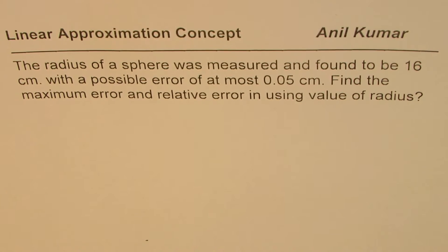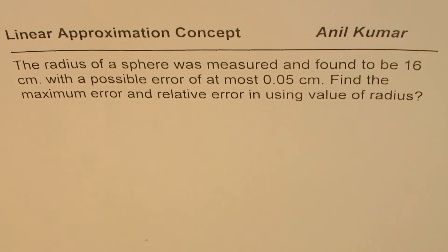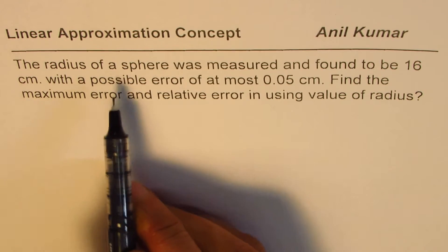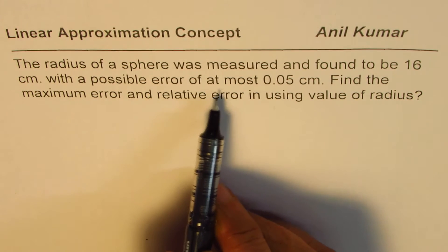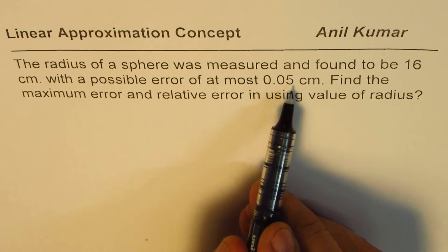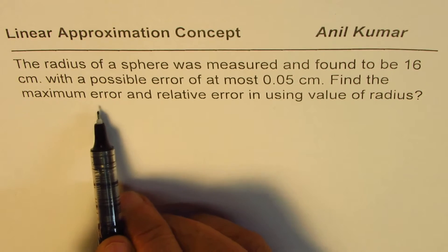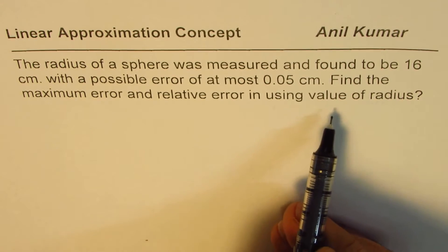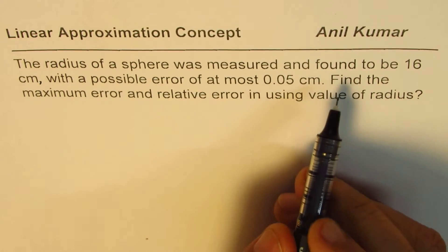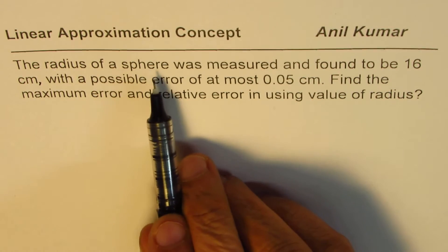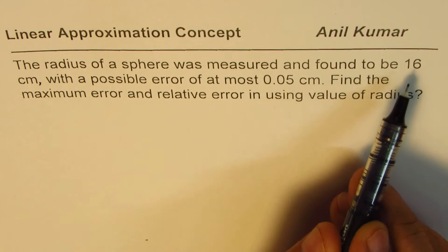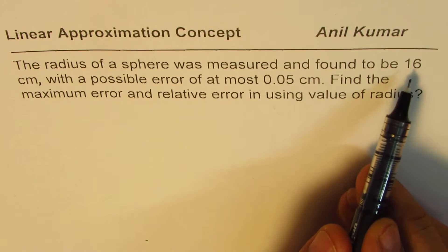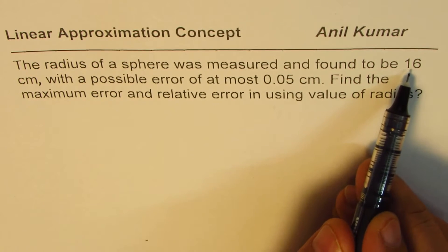I'm Anil Kumar and in this video we'll understand the link between linear approximation and the differential. The question is: the radius of a sphere was measured and found to be 16 cm with a possible error of at most 0.05 cm. In the measurement of the radius we have an error of 0.05 — that's the maximum error — so the maximum value could be 16.05 cm.